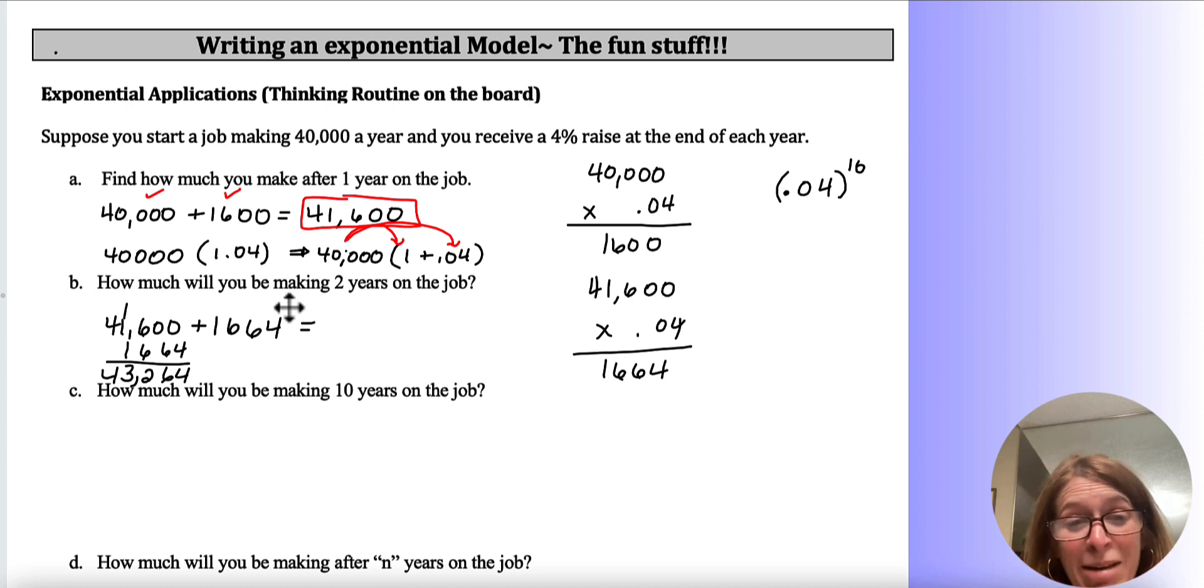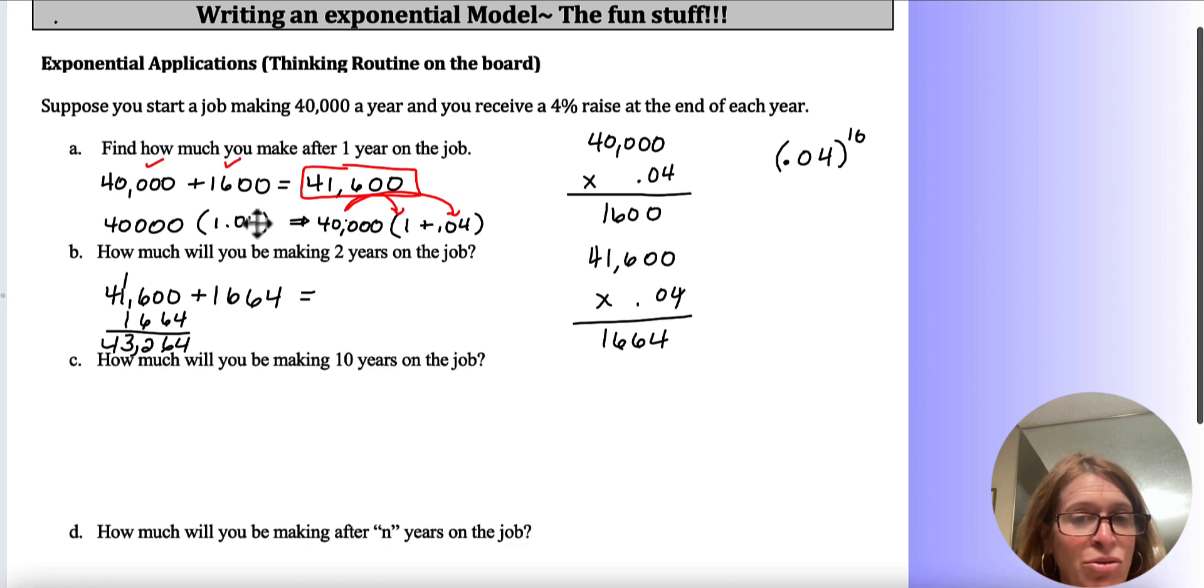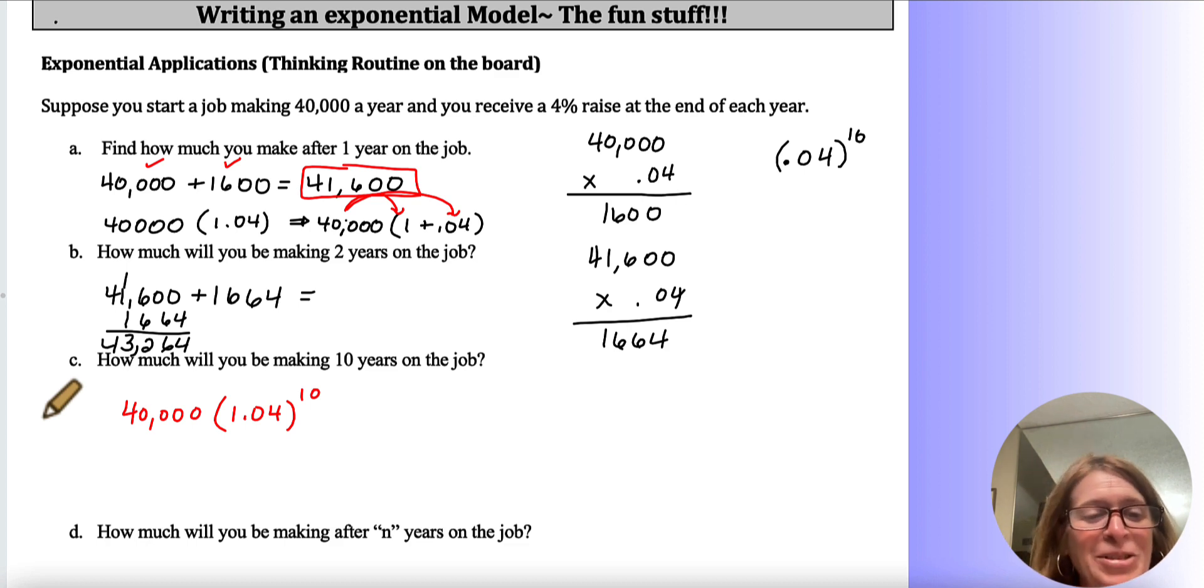We can use that same idea with 10 years on the job. If I took that original $40,000, I multiplied it by 1.04 and raised it to the 10 power, that would actually give me what I'd be making after 10 years on the job. But it has to include the 1. Otherwise, it's only giving me the interest or the raise.